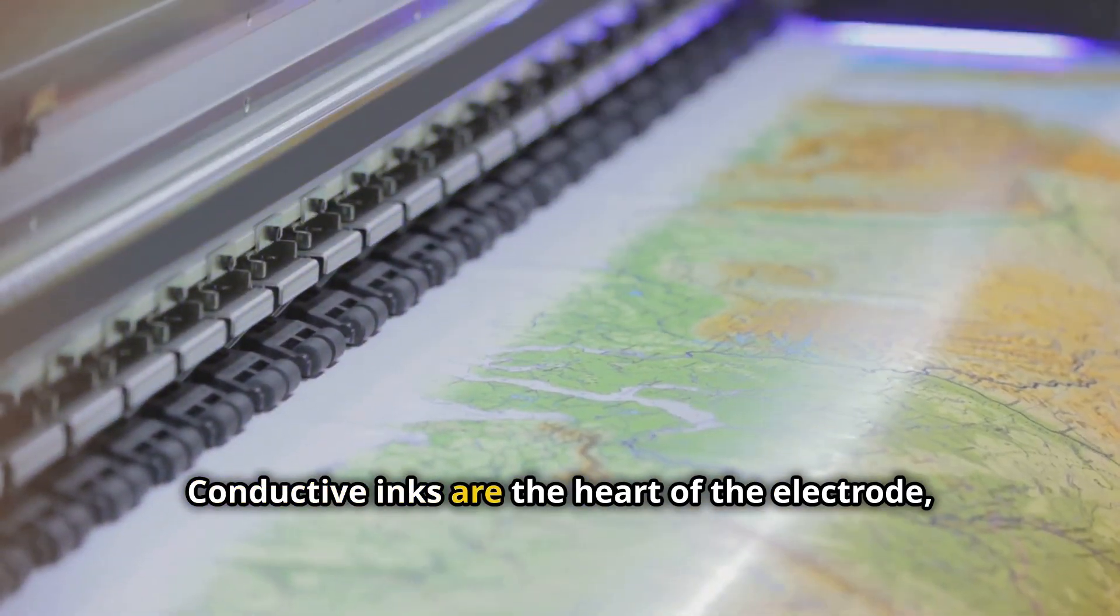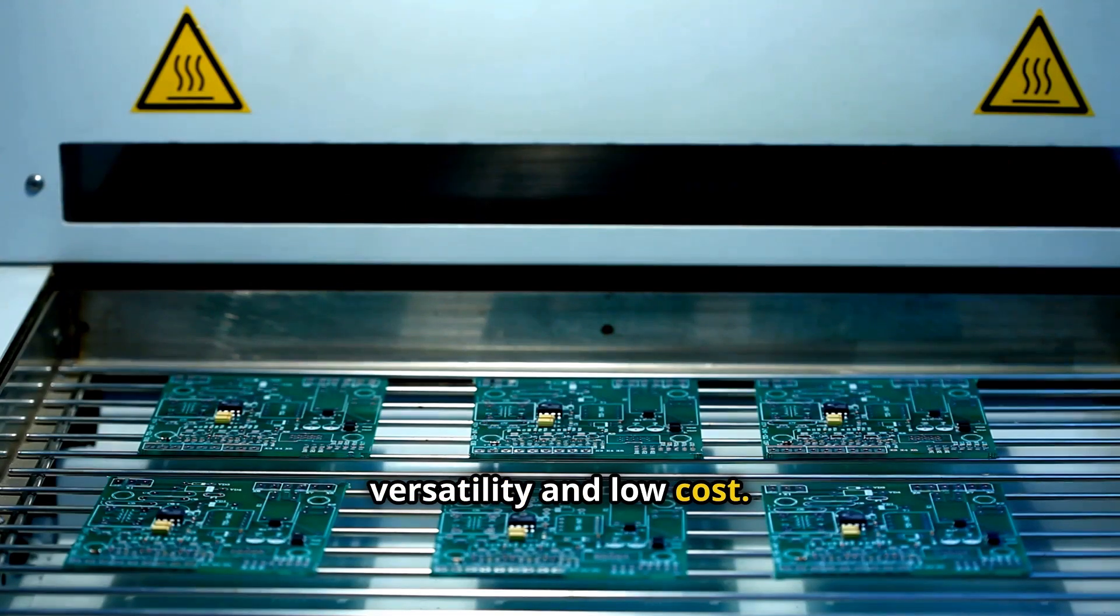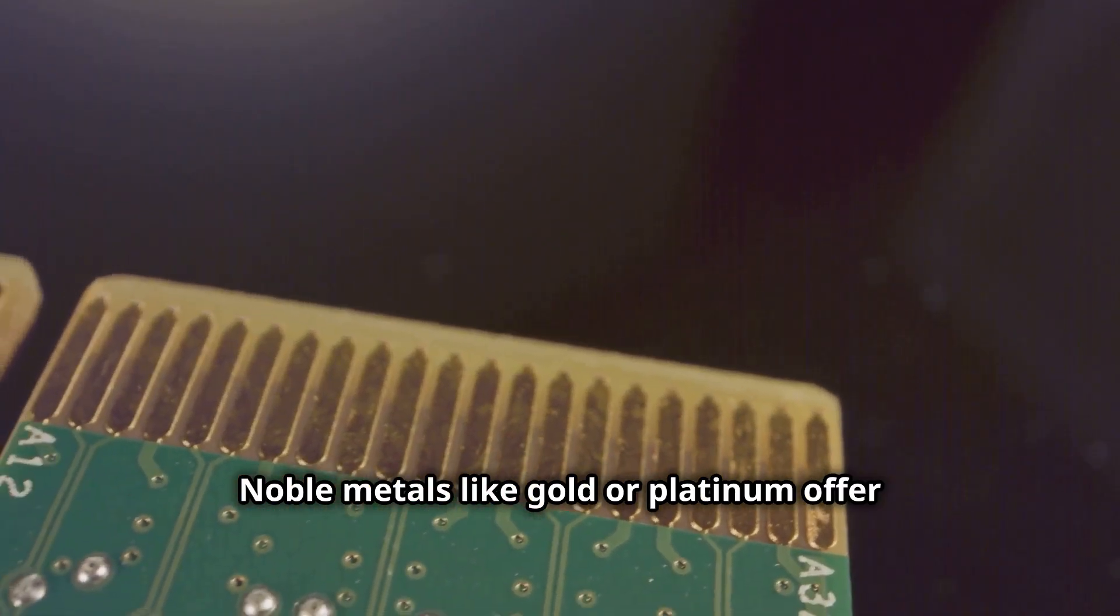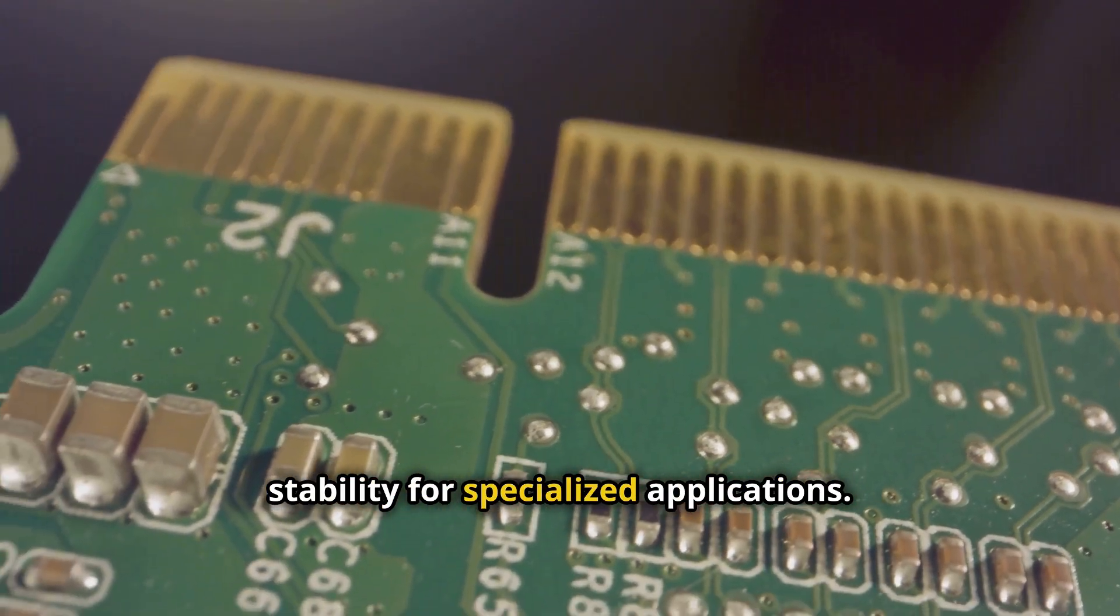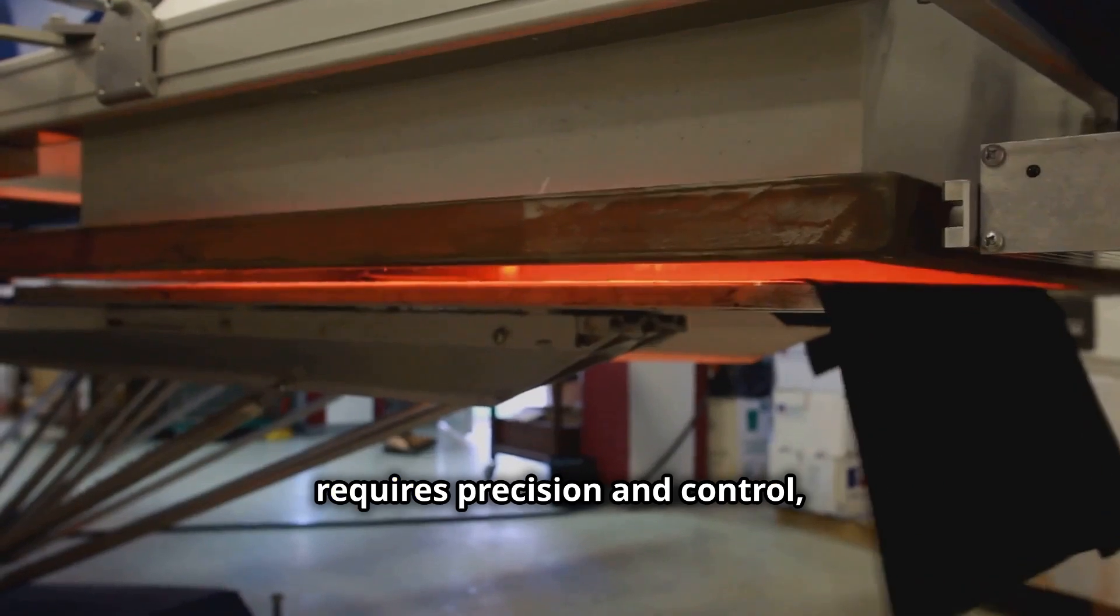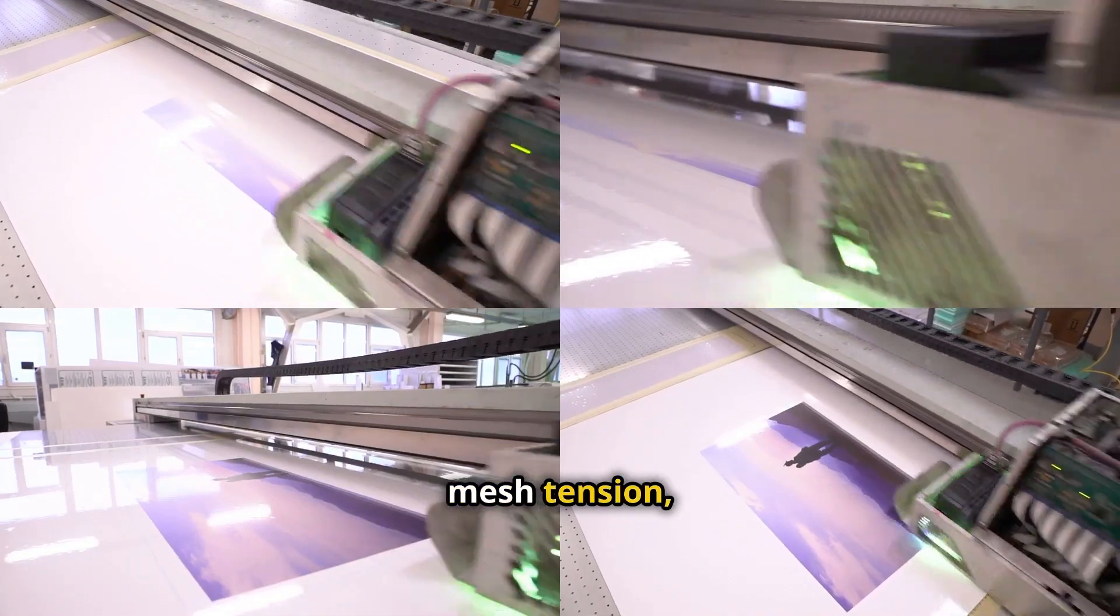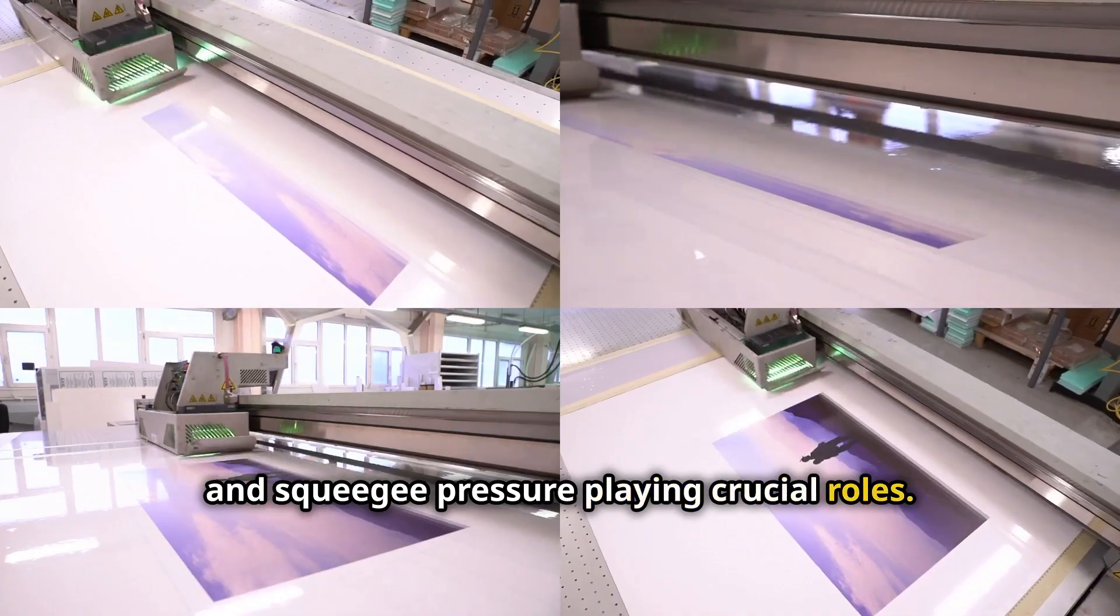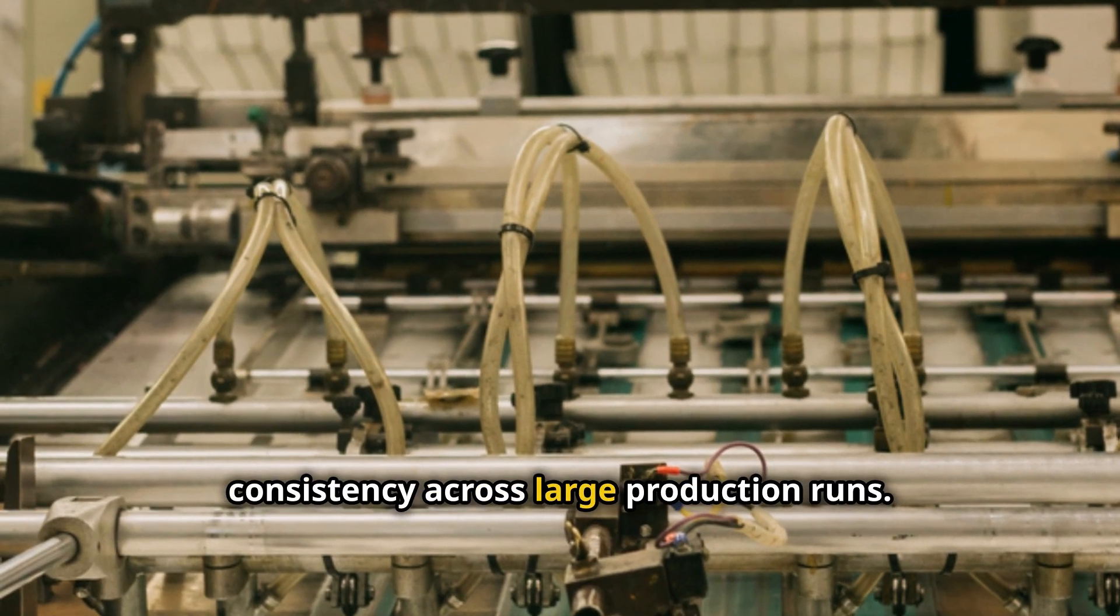Conductive inks are the heart of the electrode, with carbon-based inks popular for their versatility and low cost. Noble metals like gold or platinum offer superior conductivity and chemical stability for specialized applications. The screen printing process for SPEs requires precision and control, with factors like ink viscosity, mesh tension, and squeegee pressure playing crucial roles. Advanced printing machines ensure consistency across large production runs.